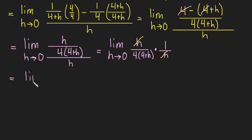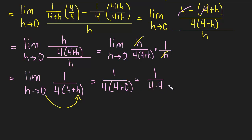We're left with the limit as h approaches 0 of 1 divided by 4 times 4 plus h. And now we can take this 0, plug it in for h, and solve the limit. So this will be 1 divided by 4 times 4 plus 0, which of course is just 1 divided by 4 times 4, which is equal to 1 divided by 16.